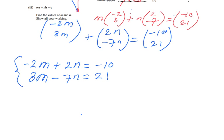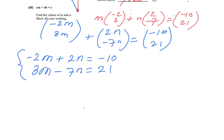Those are my two equations which I can now solve simultaneously. Two unknowns M and N, two equations. There are various ways of doing that. Most students prefer the elimination method. We're going to eliminate one of the variables. I can't do that instantly because none of the coefficients are the same. So I'm going to eliminate M. I'm going to multiply this one by 3 and that one by 2. So -6M + 6N = -30, and 6M - 14N = 42.